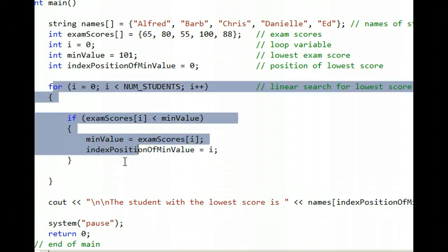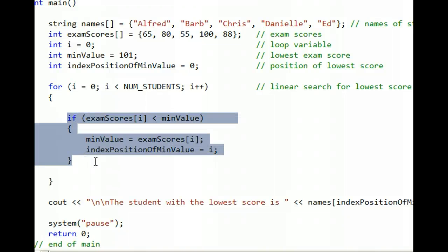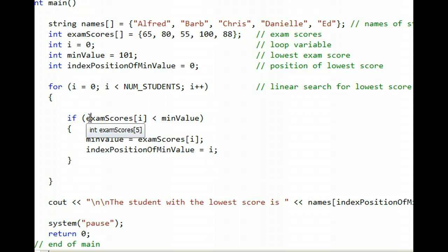The for loop is where all the action is. This for loop executes over and over again, and each time it goes around, it uses the if statement to check to see if it's found a new lowest score. So i starts at 0, and we looked at the 65, and we ask, is 65 less than 101? It certainly is. So the first minValue ends up being 65. That assignment statement stores the 65 temporarily in minValue. Then the variable indexPositionOfMinValue stores i. Well, i is currently 0, which makes sense because that's where we found the 65, in position 0.